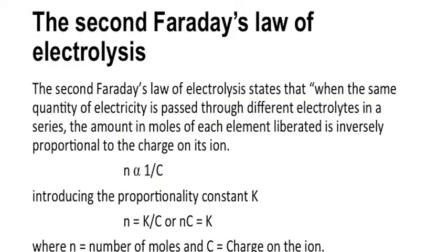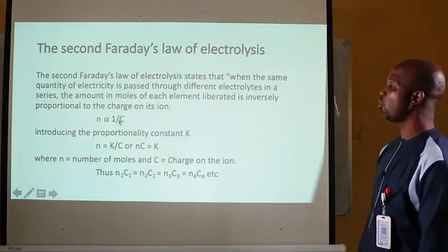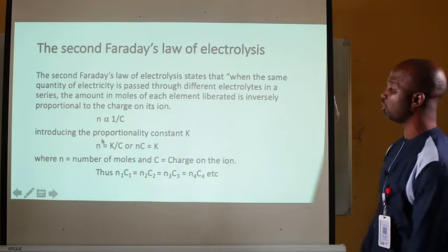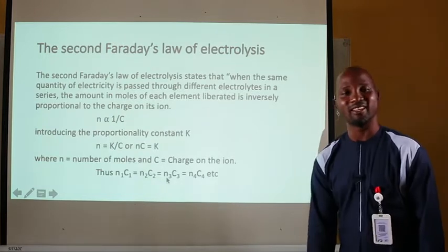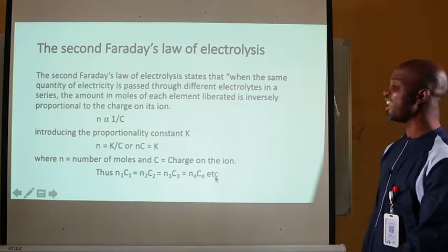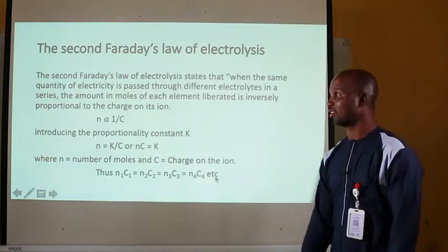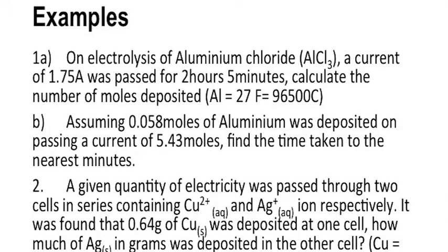The second law of electrolysis states that when the same quantity of electricity is passed through two different electrolytes in series, the amount in moles of each element liberated or deposited is inversely proportional to the charge on the ion: n ∝ 1/c. Mathematically, this gives: n₁c₁ = n₂c₂ = n₃c₃ = n₄c₄ = nncn. It is important to apply these laws to solve calculation problems on electrolysis.